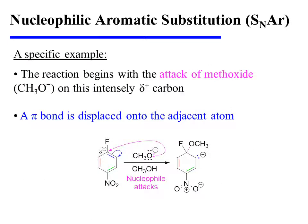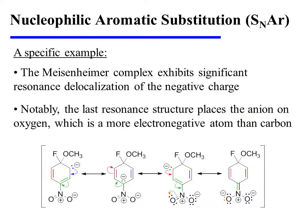This reaction begins when methoxide is attracted to that intensely electron-poor carbon. As the nucleophile attacks, a pi-bond is displaced onto the adjacent atom, yielding the Meisenheimer complex. This Meisenheimer complex exhibits significant resonance delocalization of the negative charge, much like what we saw in the generic mechanism earlier. Note that the negative charge is delocalized onto three different carbons of the ring, and due to the presence of a nitro group in a favorable location, that negative charge can be delocalized onto one of the oxygen atoms of the nitro group as well.